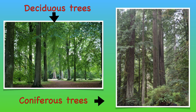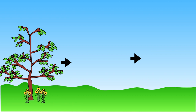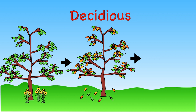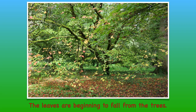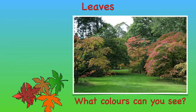When out walking you are likely to see both coniferous and deciduous trees. Deciduous trees are trees that lose their leaves in winter, often after having changed colour in the autumn. Leaves begin to grow once again in spring as the weather gets warmer and the days get longer. Look at all the amazing different colours — what colours can you see?